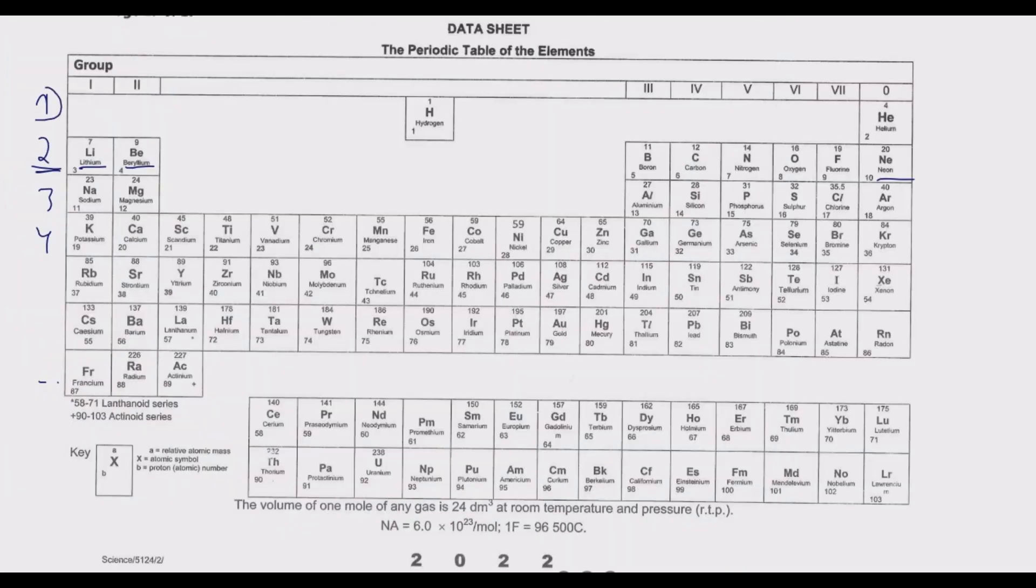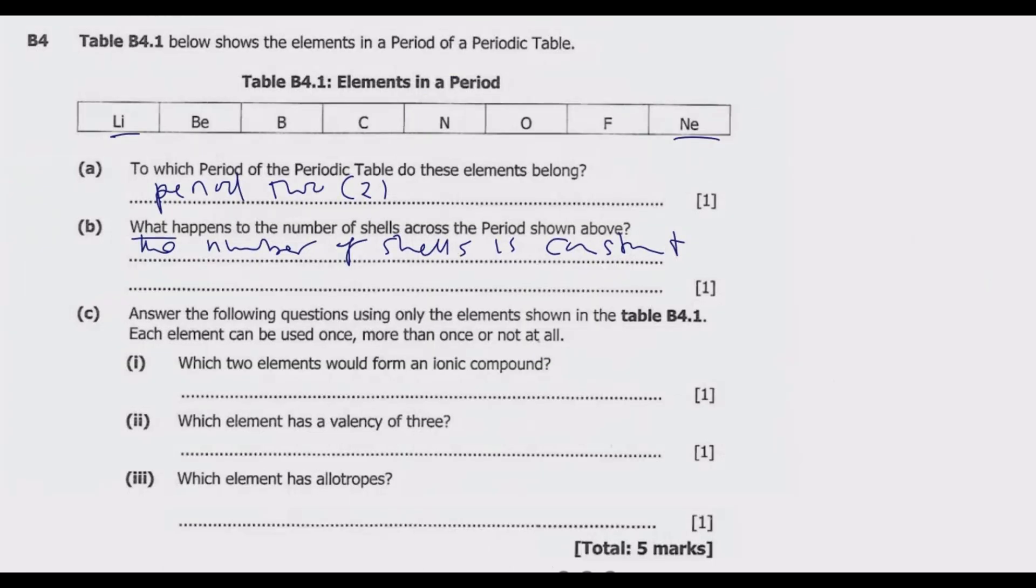So this is one shell. You notice that hydrogen has got only one shell, also helium. The number of protons are the same as the number of electrons. Then as you move down the periodic table, the number of shells increases. That's why you see the number of periods increases as you move down the periodic table.